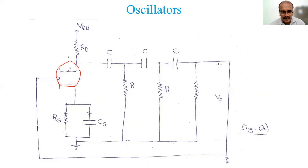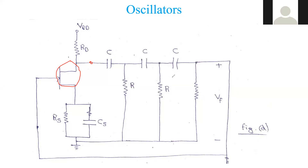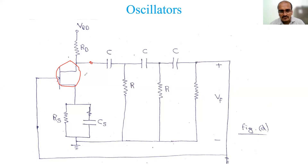On the source side there is a source resistance bypassed with a capacitor, and you have the drain resistance Rd. The feedback network is a frequency selective network. The output is taken across the drain, and three cascaded CR sections are connected. The 180-degree phase-shifted output is given in series with the gate.